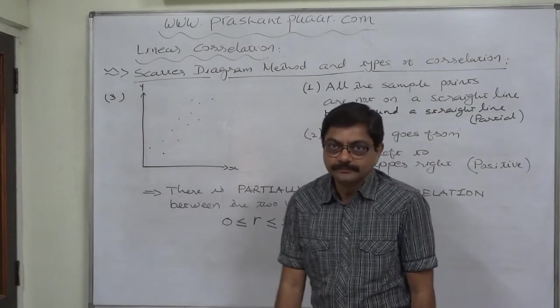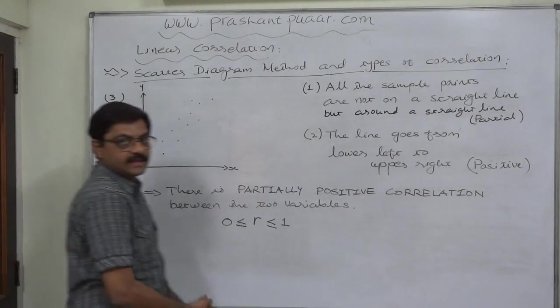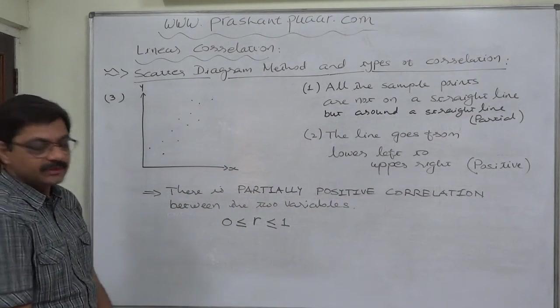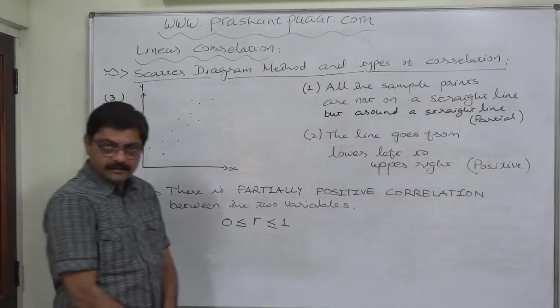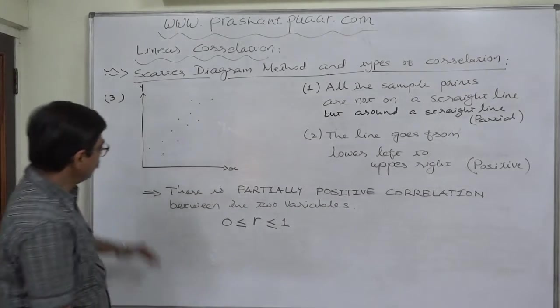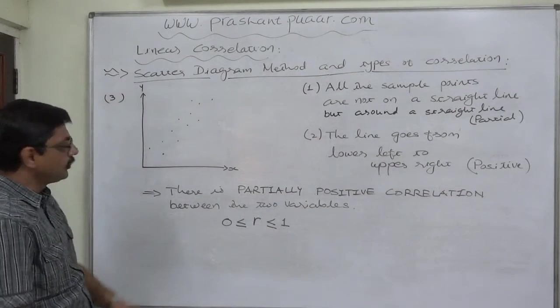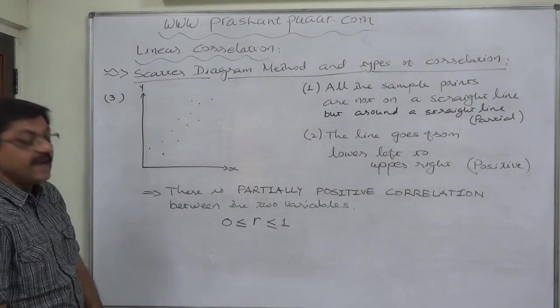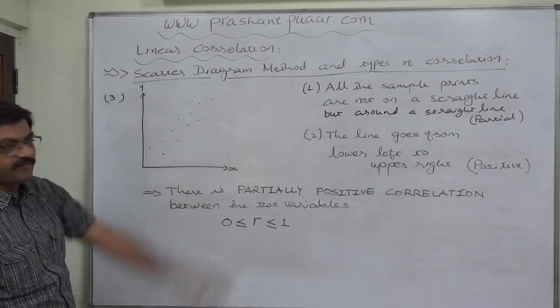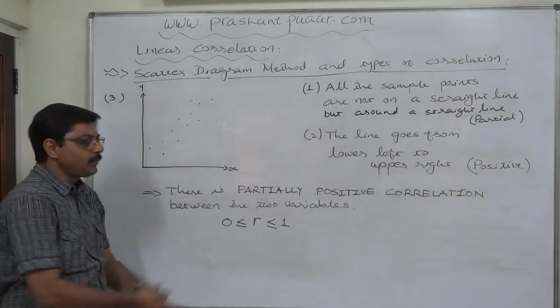Hello friends, welcome to a new case on scatter diagram method. The third possibility: again, take a graph paper, draw the independent variable on the horizontal axis, dependent variable on the vertical axis, and plot all the sample points on the graph paper.